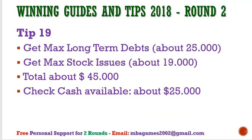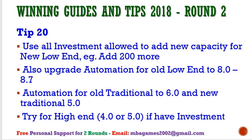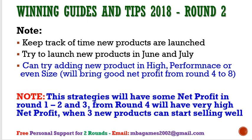Tip 19: Get maximum long-term debt — about $25 million in Round 2 — and maximum stock issuance of about $90 million, giving about $45 million total investment for Round 2. Keep about $20 to $25 million cash in hand to avoid stockouts. Tip 20: Use available investment to add new capacity for low-end — about 200 more, bringing total to 700 or 800. Update automation to 8 or 9 for low-end, 6 for traditional, and about 4 for others. Rounds 1 and 2 are very important, so spend more time on those decisions — getting them right means you can control the game easily from Round 3 onward.